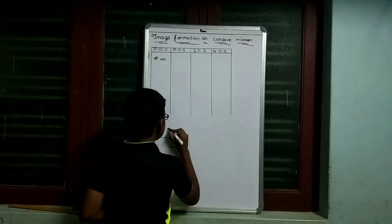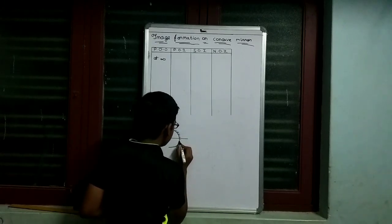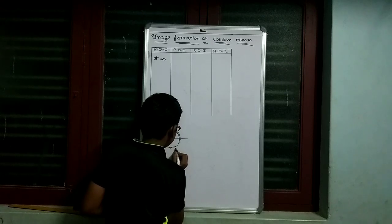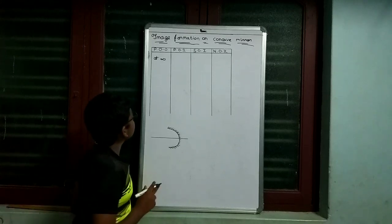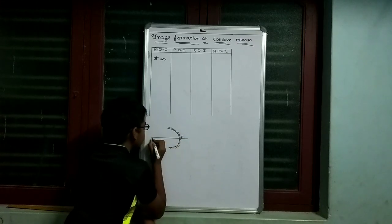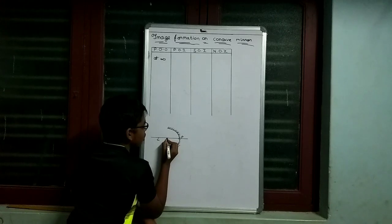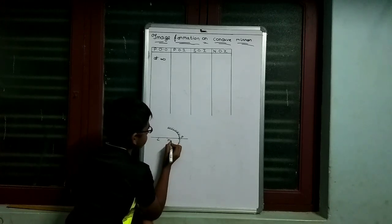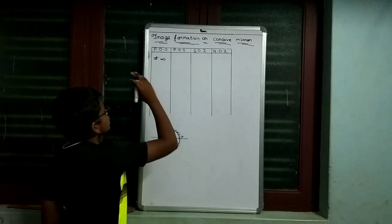We mark the important points on the concave mirror: the pole, the center of curvature, and the focus. Now the object is at infinity — we can think of the sun as the object at infinite distance, so we use direct parallel light rays.